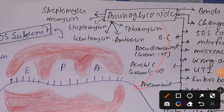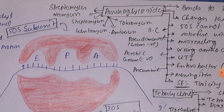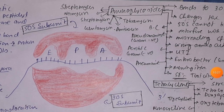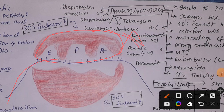Now for 30S subunit inhibitors: aminoglycosides are extracted from Streptomyces. Examples include neomycin, amikacin, streptomycin, gentamicin, and tobramycin. Aminoglycosides bind irreversibly to the 30S ribosomal subunit, causing a conformational change so that the 50S subunit cannot bind, interfering with initiation of protein synthesis, facilitating misreading of mRNA codons, and causing insertion of wrong amino acids.